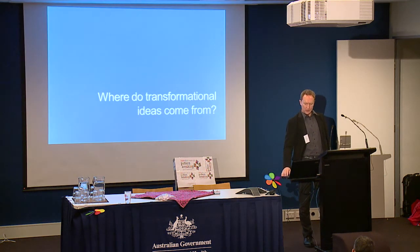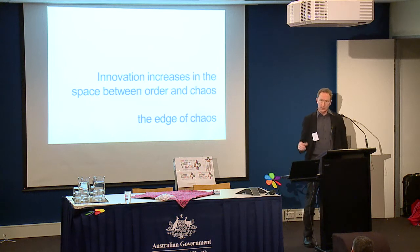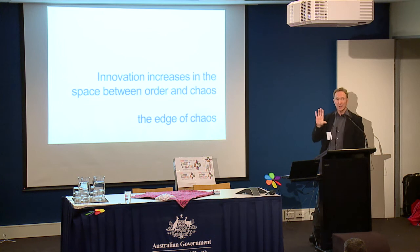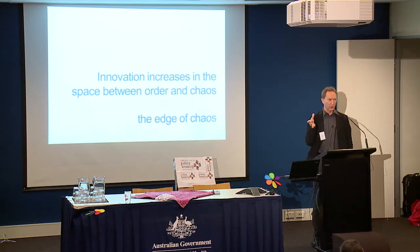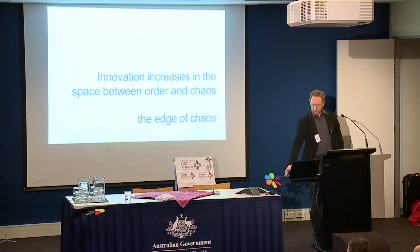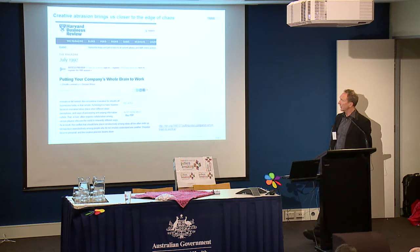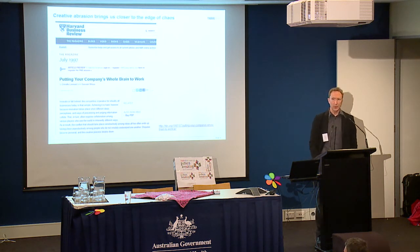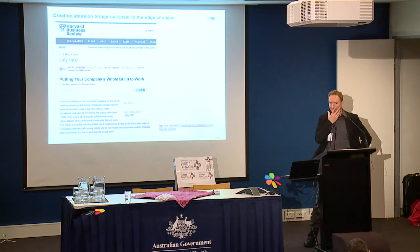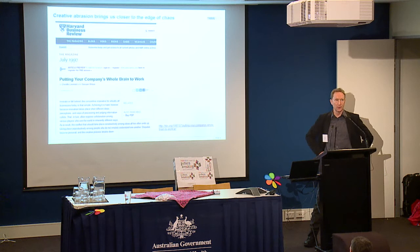Where do transformational ideas come from? The hypothesis in this talk is that they often come in that space between order and chaos — or if we stick with the Greek words, between cosmos and chaos. That term is often referred to as the edge of chaos. There's another HBR article called 'Putting Your Company's Whole Brain to Work.' A concept coined somewhere in the 90s called creative abrasion: innovation often comes when two, three or four disciplines come together from different perspectives and you get a new idea.